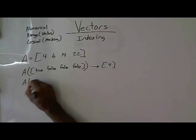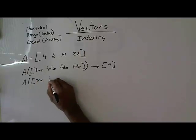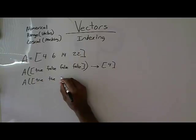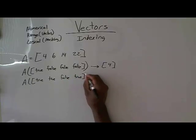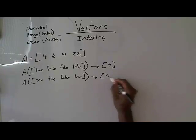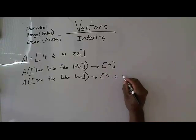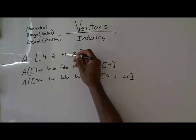If I did A indexed at true, true, false, true, then that's going to give me back the vector 4, 6, 22. 14 didn't make the cut because it got indexed, it got masked out with the false.